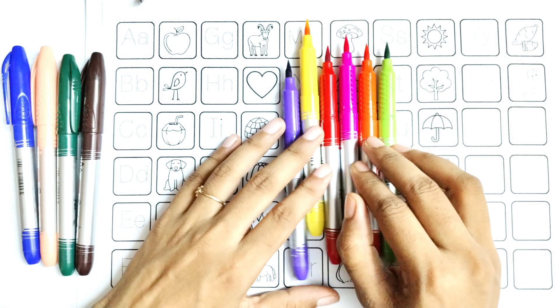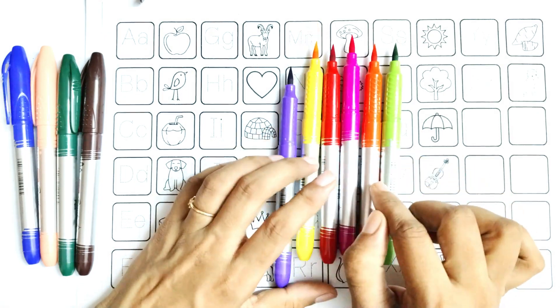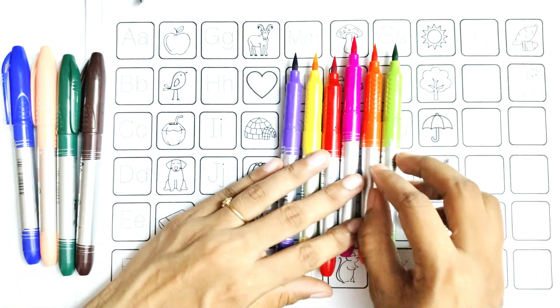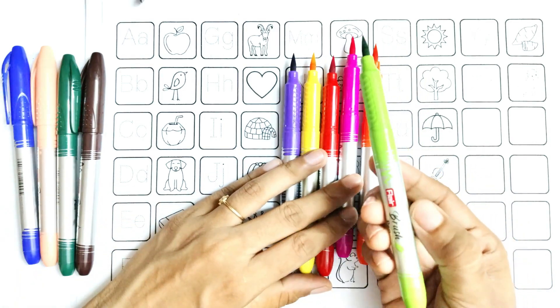Hello kids, today we will learn color names and the English alphabet. At first, say with me color names: light green, orange, pink, red, yellow, purple.